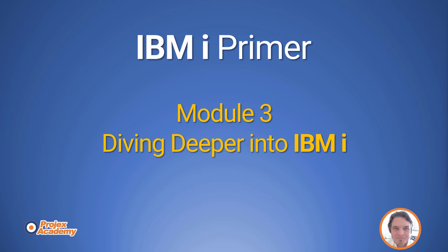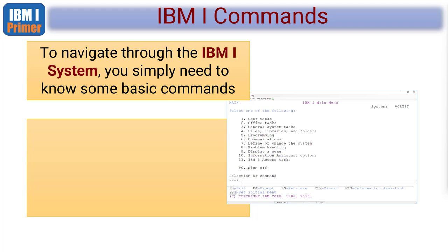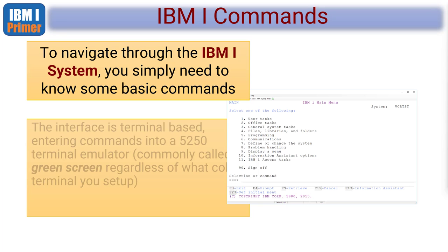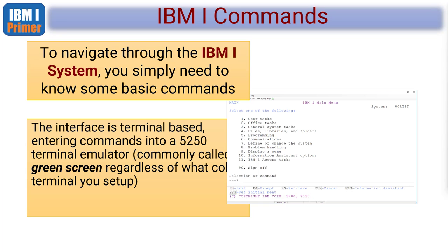Let's have a slightly deeper dive into the wonderful world of IBM i. When you're using an IBM i system, you sign on to the machine and you'll be presented with this main menu. The menu structure always tells you the system name top right, the menu name top left - this is 'main' - and then it has a list of sub-menus. Everything on the system is command based.